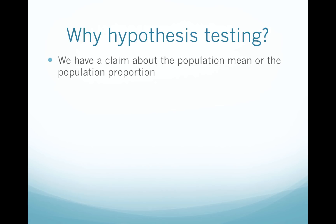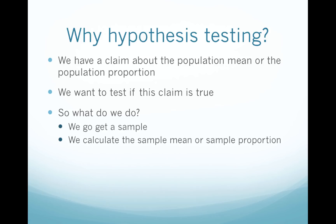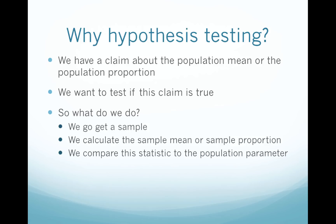What happens is we have a claim about the population mean or the population proportion — a claimed number for where the distribution is centered. And we want to test if this claim is true or not, whether the distribution really is centered at this value. So we go get a sample, calculate either the sample mean or sample proportion, and then compare this statistic to the population parameter using something called the p-value.